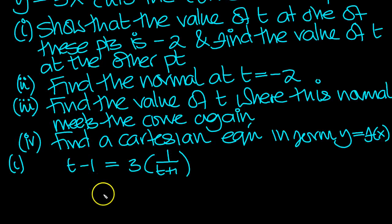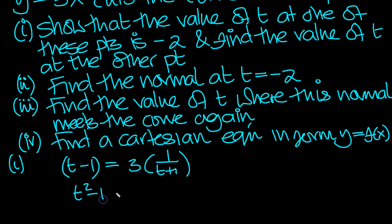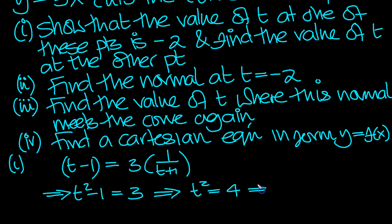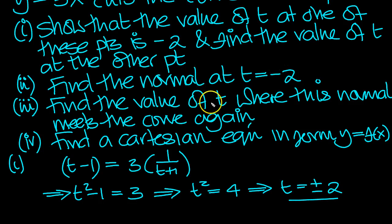Moving t plus 1 up, we get t minus 1 times t plus 1, which we can write straight away as t squared minus 1, because that's a difference of two squares. That will equal 3. So t squared equals 4, moving the minus 1 over. Taking the square root of both sides, t equals plus or minus 2. So t equals minus 2 is one solution, and the other value is plus 2.